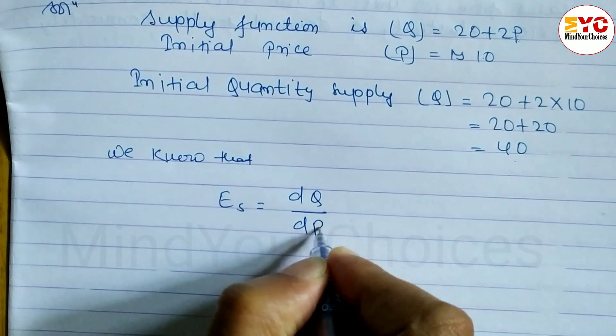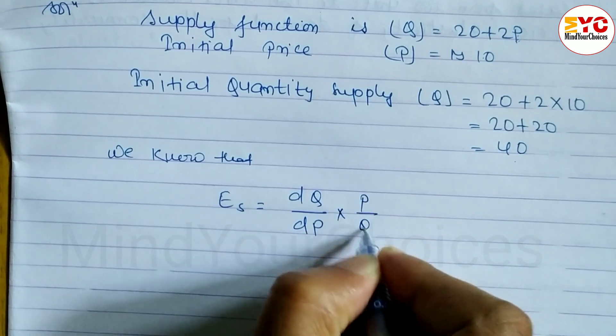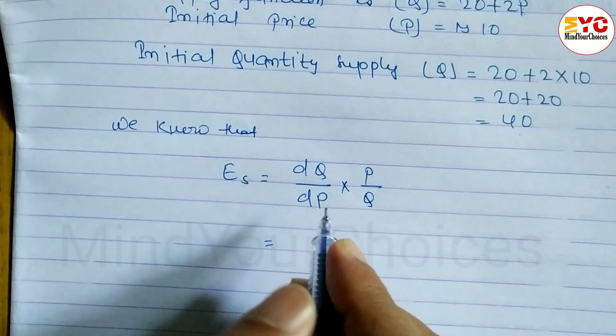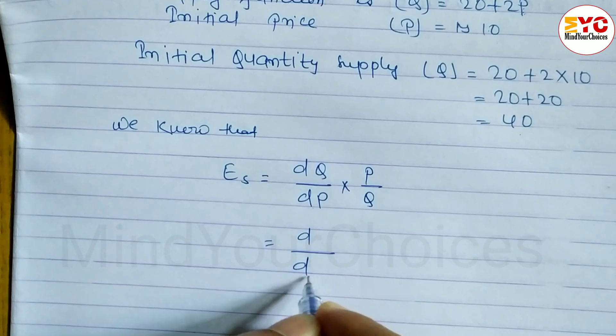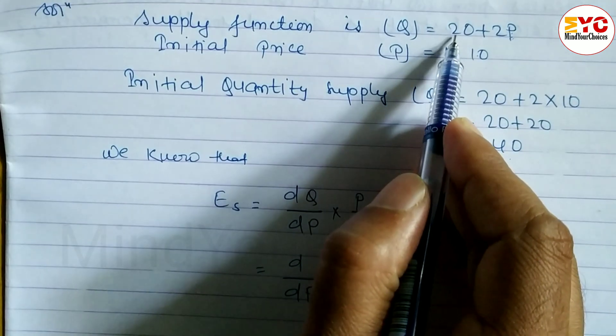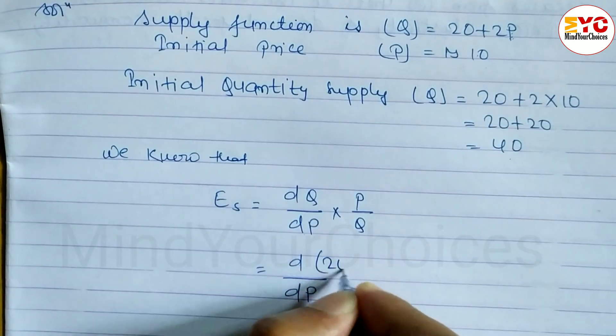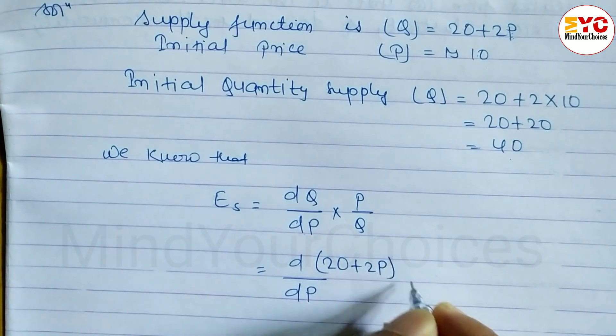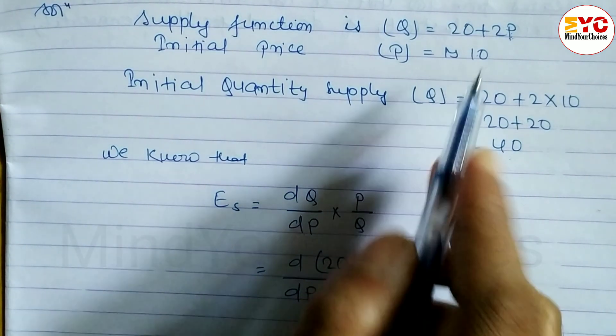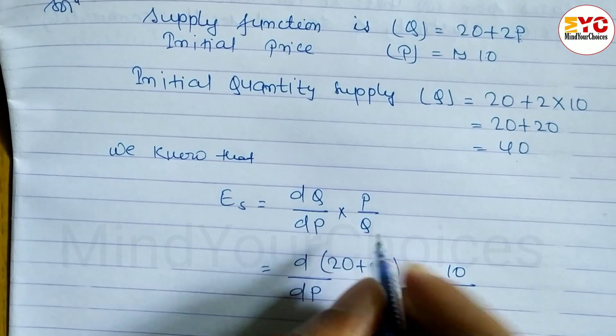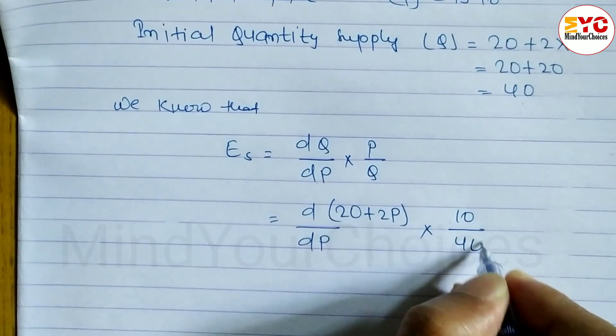We know that Es is equal to DQ by DP into P by Q. DQ by DP means D by DP, what is the value of Q? Q is equal to 20 plus 2P, so write here 20 plus 2P into P, what is the value of P? 10, 10 divided by Q. Q is equal to 40, so write down here 40.